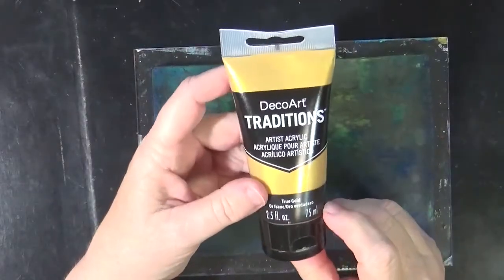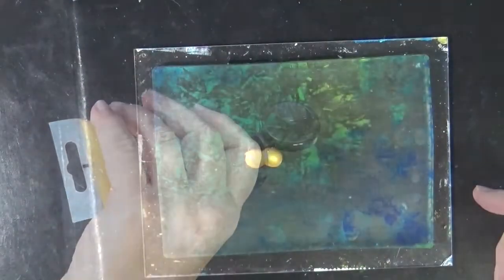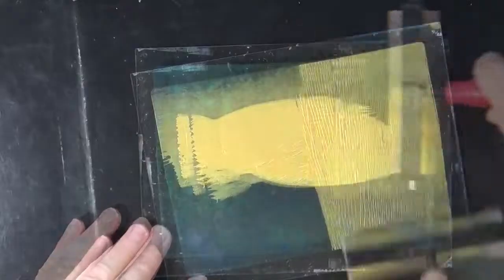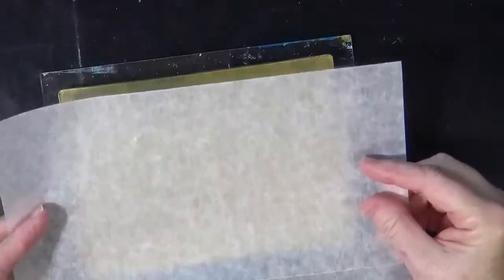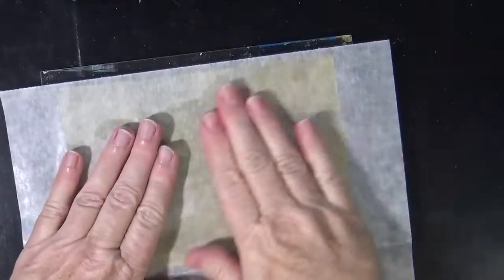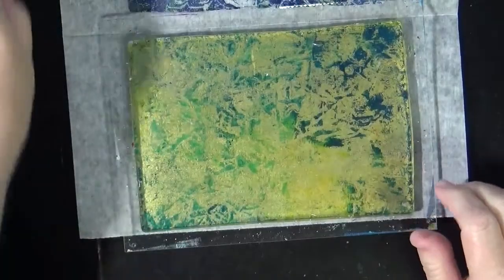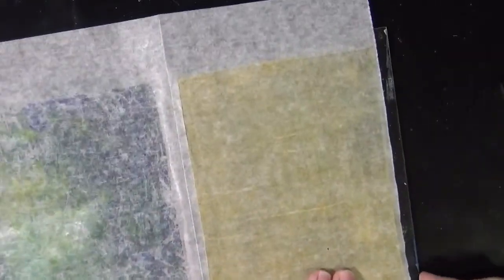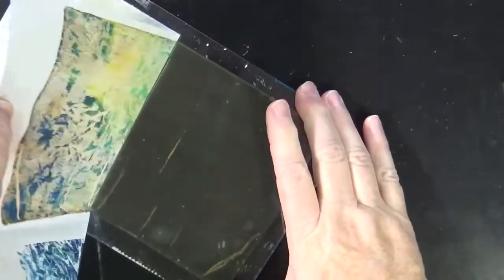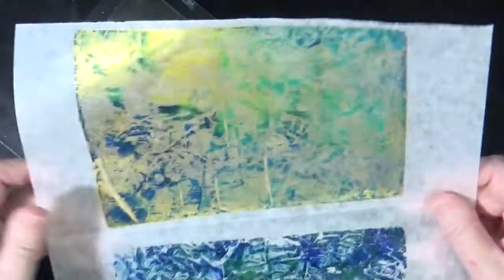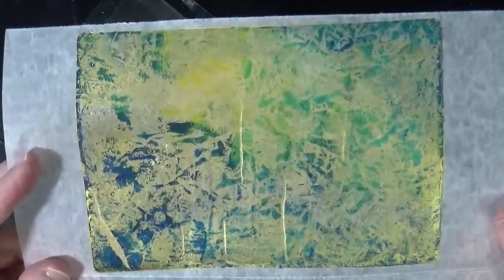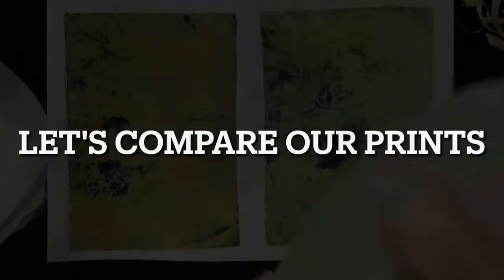Let's take this. This is a Traditions True Gold, it's called. And this is another DecoArt product. But let's put some gold out here. I think I'm just going to use the other side of this piece of deli paper. So let's lay it down over the top. Oh my gosh! Look at that! Let's let that sit. I'm not going to pull that until it's completely dry. I think we can pull this up. Oh, I love that. Look at how bright gold that is.